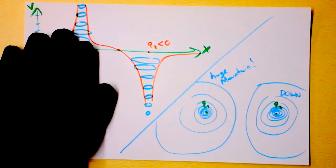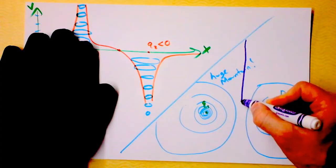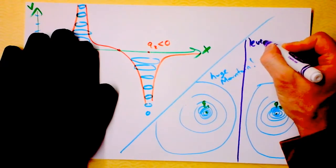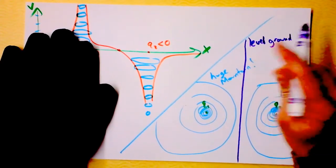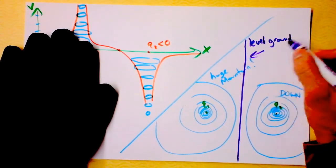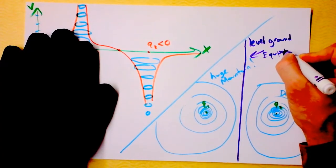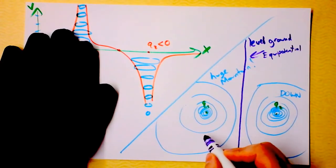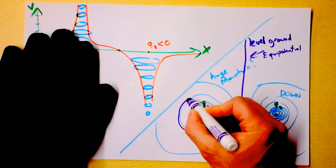And this is a huge pit of despair. And then there's level ground. Let's see if I can draw a purple line where the ground is level — right in between the huge mountain and the huge hole, there must be level ground. Level ground sounds like equi-height or equi-potential. So this line right here is equi-potential.